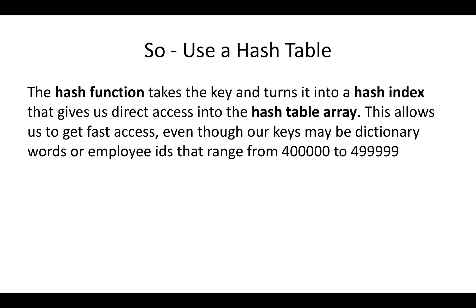So we're going to use a hash table. A hash function takes some key as input and turns it into a hash index, which is a positive integer, giving us direct access into the hash table array. If our table is a certain size — say 100 — we do a hash function that's mod 100, and any key we give it will generate an index between 0 and 99. By turning any key into a hash index, we get fast access to the hash table, and all our data is stored at the index determined by the hash function.